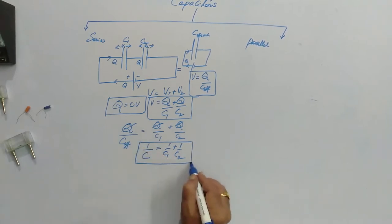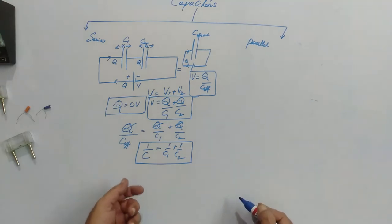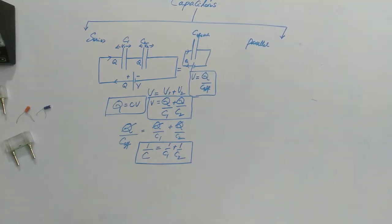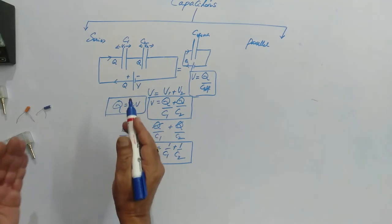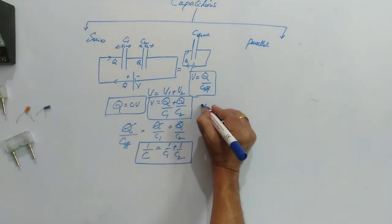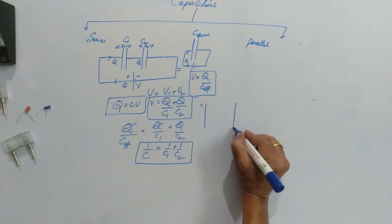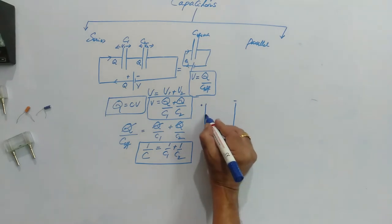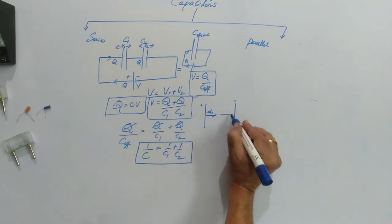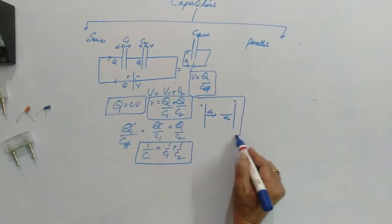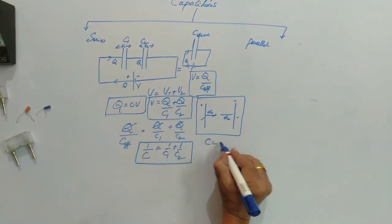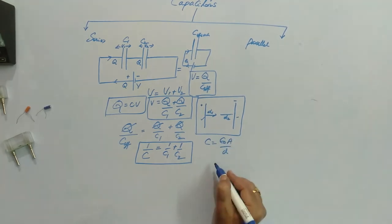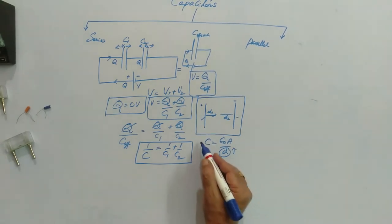This clearly tells us that when two capacitors are joined in series, the net capacitance is reduced. This can also be understood intuitively: when connected in series, the first plate of the first capacitor and the second plate of the second capacitor are separated by a total distance D1 + D2. Since C = ε₀A/D, when D is increased, the capacitance is reduced.